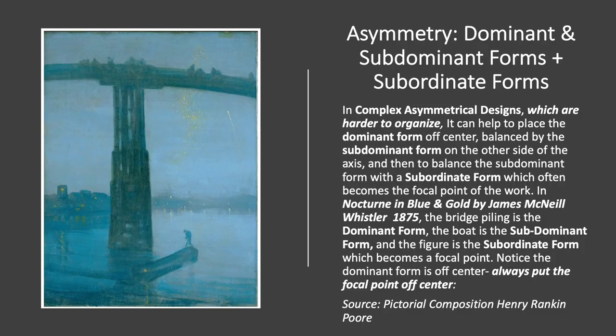Asymmetrical designs are often harder to create. In this painting by James McNeill Whistler, Nocturne in Blue and Gold, we have what we call dominant forms — the bridge and the piling — which are a little bit off-center to the left of the center point. We have a subdominant form, which is the boat, at a diagonal from the bridge, and then we have a subordinate form, which is the figure standing on the boat — and that becomes the focal point in the painting. You don't want to put your focal point right in the center of a design; you always want to have the focal point a little bit off-center.